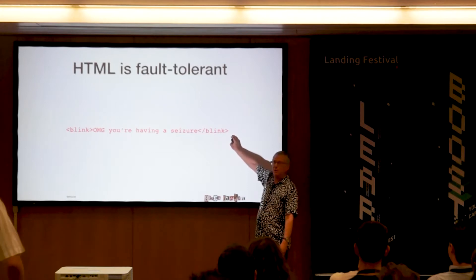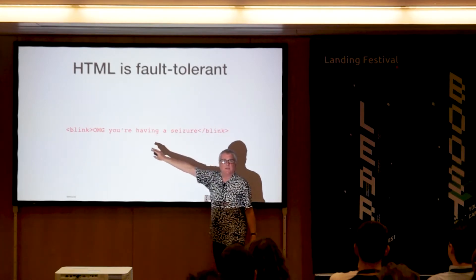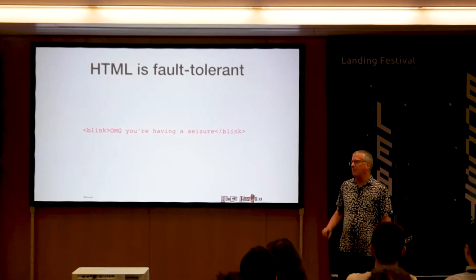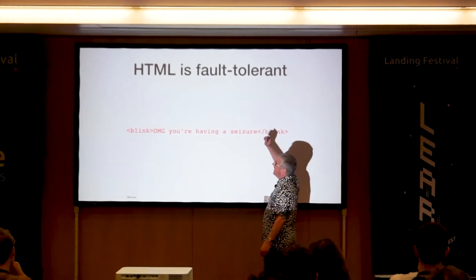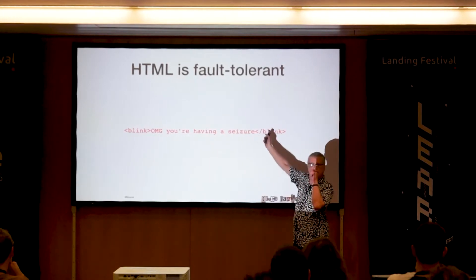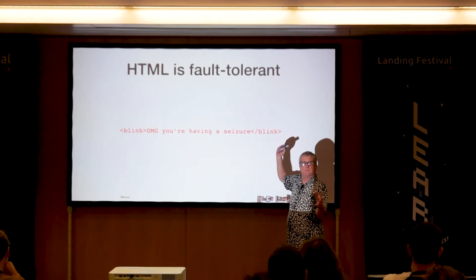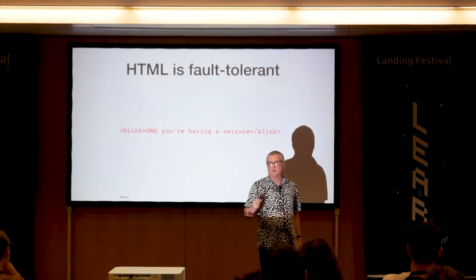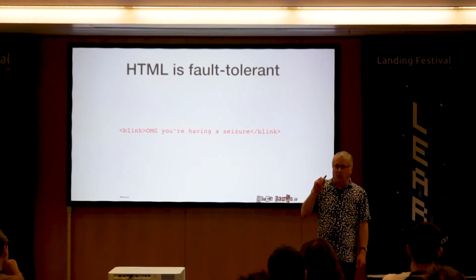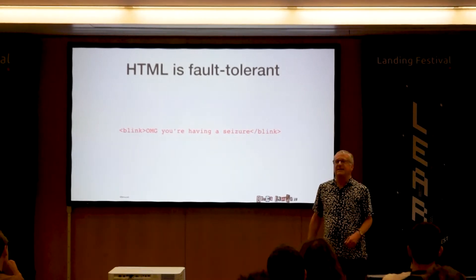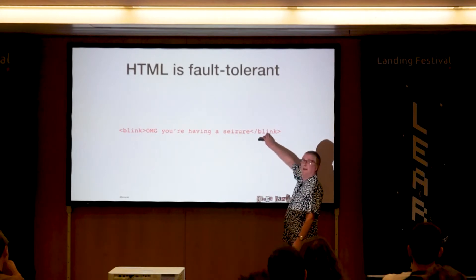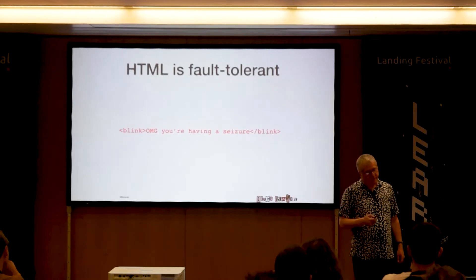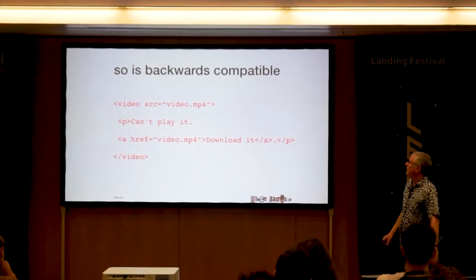HTML is fault tolerant. Netscape invented the blink tag, which makes text blink. Internet Explorer never implemented it — but when Internet Explorer sees it, it just shows the content. When any browser sees an HTML element it doesn't know, it will always show the content. Which means that if you have a browser that doesn't understand the blink tag, you still see the content — by design. HTML is, by design, backwards compatible.